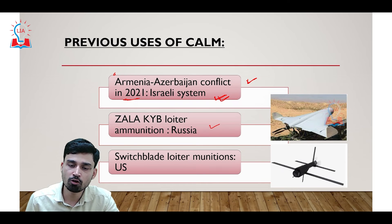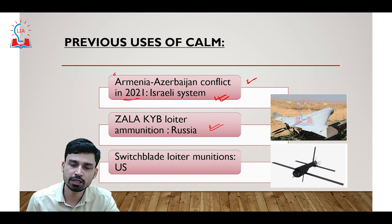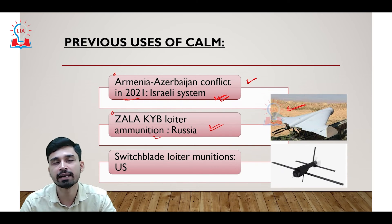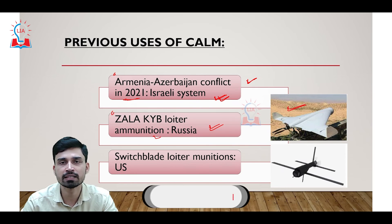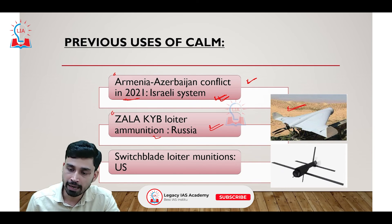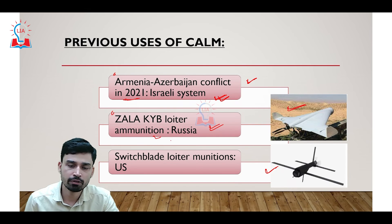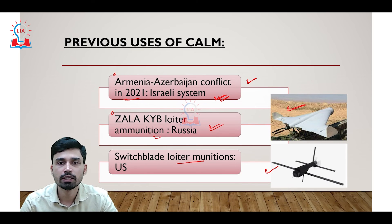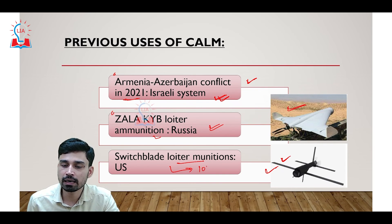The second use can be seen in the ongoing war between Russia and Ukraine, where Russia is using its Zala-KUB loiter ammunition — whose picture you can see on the right-hand side — against Ukrainian infantry vehicles and tanks. At the same time, the US is also supplying Ukraine with Switchblade loiter munitions, a similar CAM-based system that can destroy enemy targets up to 10 kilometers from where it is fired.